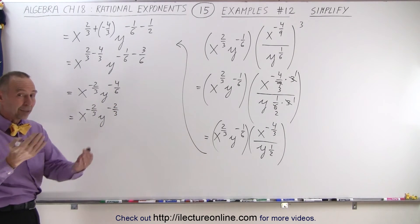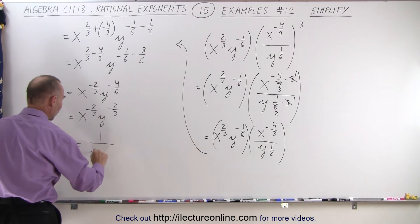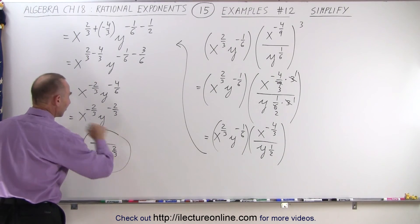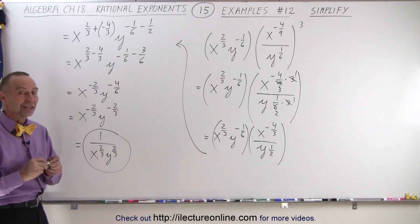and of course, since they're negative exponents, I can write them on the denominator and turn them into positive exponents. 1 over x to the two-thirds, y to the two-thirds, and this would then be the final format of our original problem, and that is how it's done.